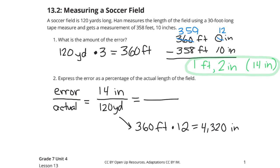So our amount of error, once again, was 14 inches of error. Our 120 yards is equal to 4,320 inches. And once we have that, we can divide 14 by 4,320.